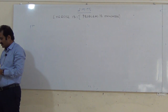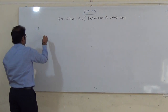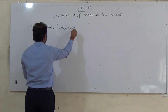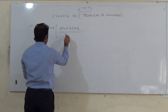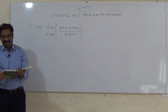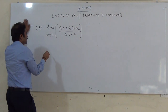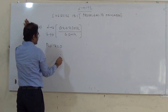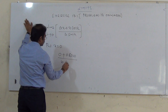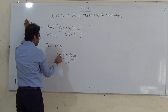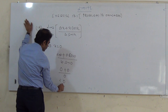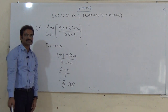Next, problem 18: limit of (ax + x cos x) / (b sin x) as x tends to 0. Put x = 0: (a·0 + 0·cos 0) / (b·sin 0) = (0 + 0)/0 = 0/0, which is IDF.